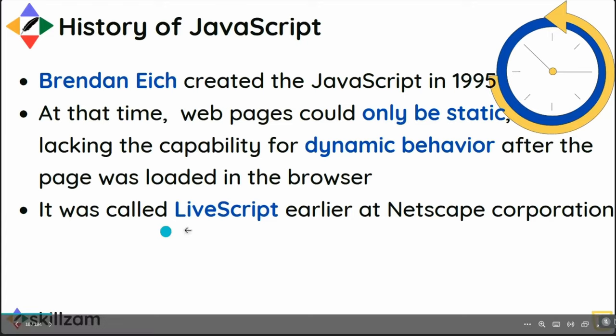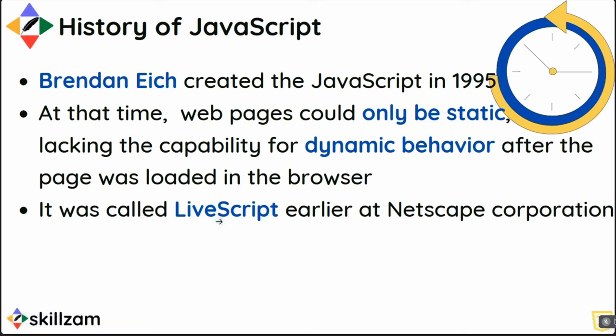At that time, JavaScript was called LiveScript — it was not JavaScript. Why did it become JavaScript? Because in the mid-90s, Java was a very popular programming language. Brendan Eich thought: if we add something to Java's name, then because of Java's popularity, JavaScript might also gain popularity. That was the logic behind it.